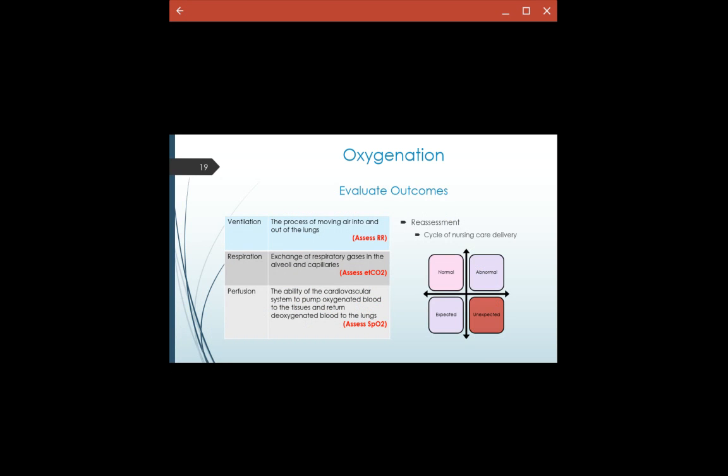So when we're evaluating outcomes, we're really just reassessing all of the things we assess to begin with. So our normal outcomes would be to have a healthy respiratory rate, that 10 to 20, adequate oxygenation so that SpO2, that perfusion. We know they're oxygenating effectively, and then our end-tidal CO2, we're having effective exchange of the respiratory gases. But we want to see them maintaining their own airway.